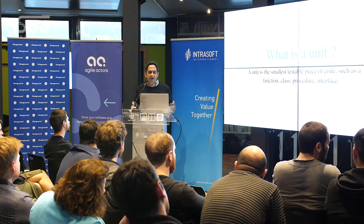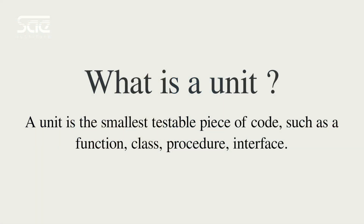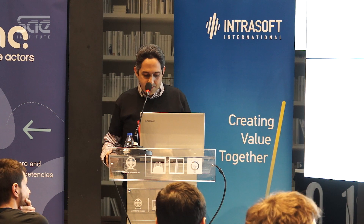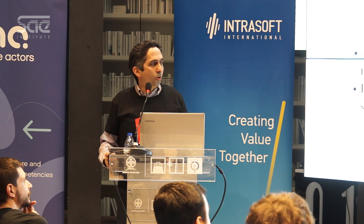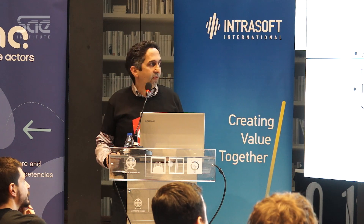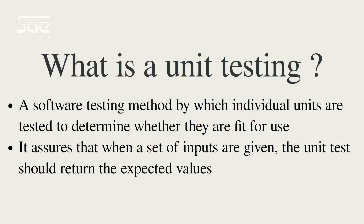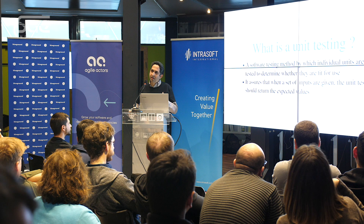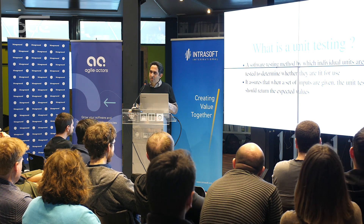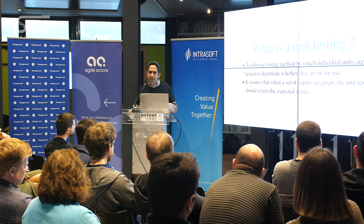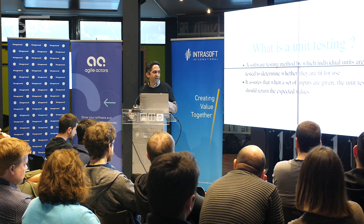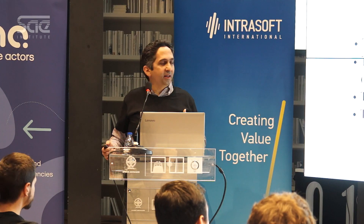Let's define what is a unit. A unit is the smallest testable piece of code, such as a function, a class, a procedure, or interface — the piece of code that you want to test and verify that all is going well. Unit testing is the testing method by which individual units are tested to determine whether they are fit for use. For example, if in our tests we give some inputs, we expect that our unit will yield the expected values.